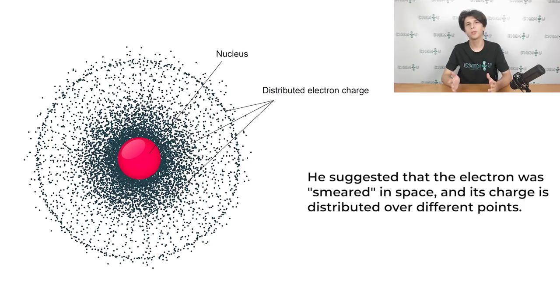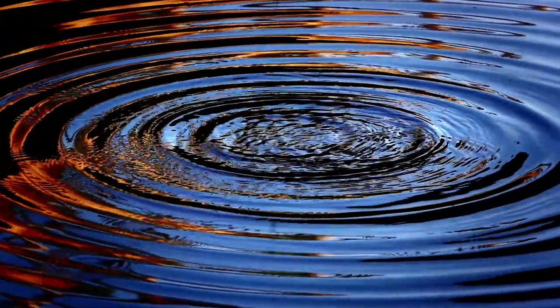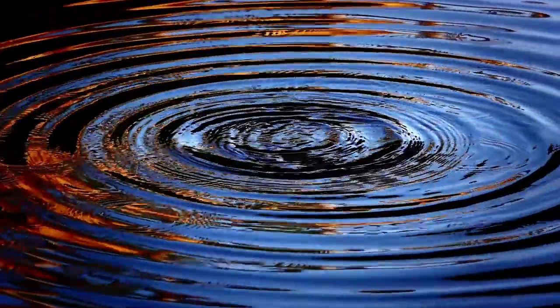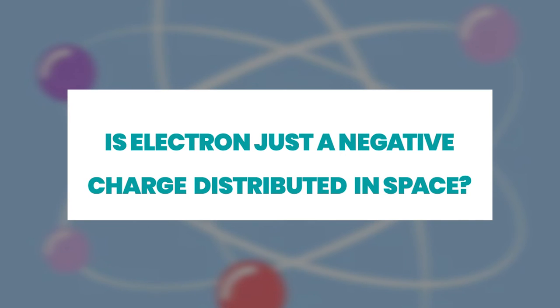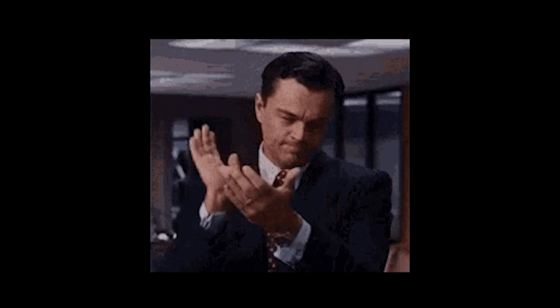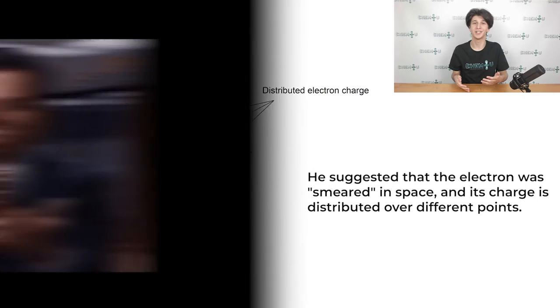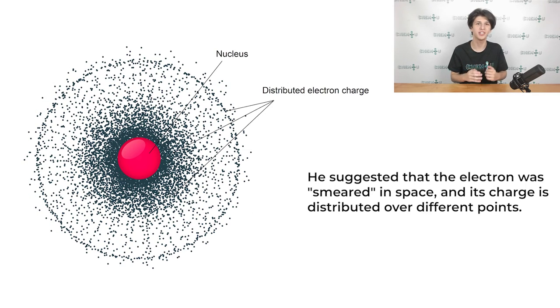It's a very logical conclusion, isn't it? After all, it is easy to imagine as a wave distributed in space on the surface of the water. Keeping that in mind, can we say that an electron is just a negative charge distributed in space? Unfortunately, this interpretation turned out to be fundamentally wrong. Amazing! Schrödinger derived an equation but could not correctly substantiate its meaning.